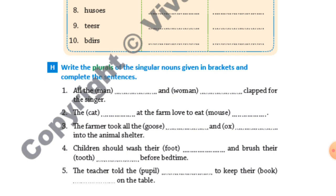Last exercise: Write the plurals of the singular nouns given in brackets and complete the sentence. First one: 'All the ___ [man] and ___ [woman] clap for the singer.' The correct answers are 'men', M-E-N, and 'women', W-O-M-E-N.